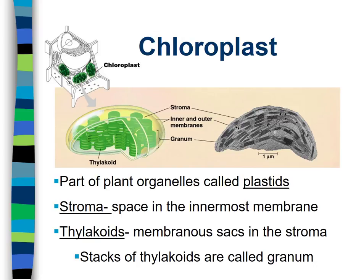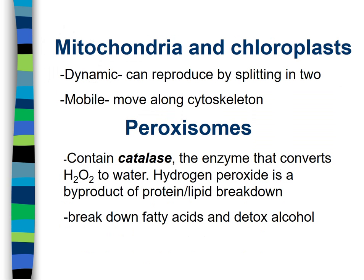The chloroplast has an inner membrane called the thylakoid membrane and an outer membrane; the fluid surrounding the inner membrane is called stroma. The chloroplast converts light energy into chemical energy in the form of sugar through photosynthesis. Peroxisomes play a role in converting hydrogen peroxide — a byproduct of protein and fat breakdown — which is very poisonous, into water and oxygen gas using an enzyme called catalase.